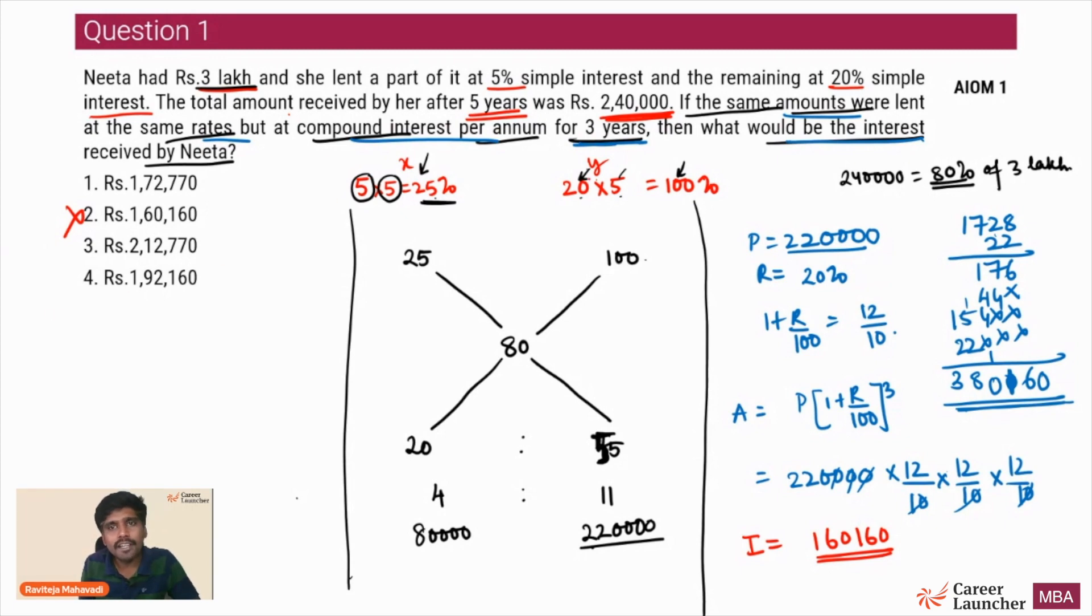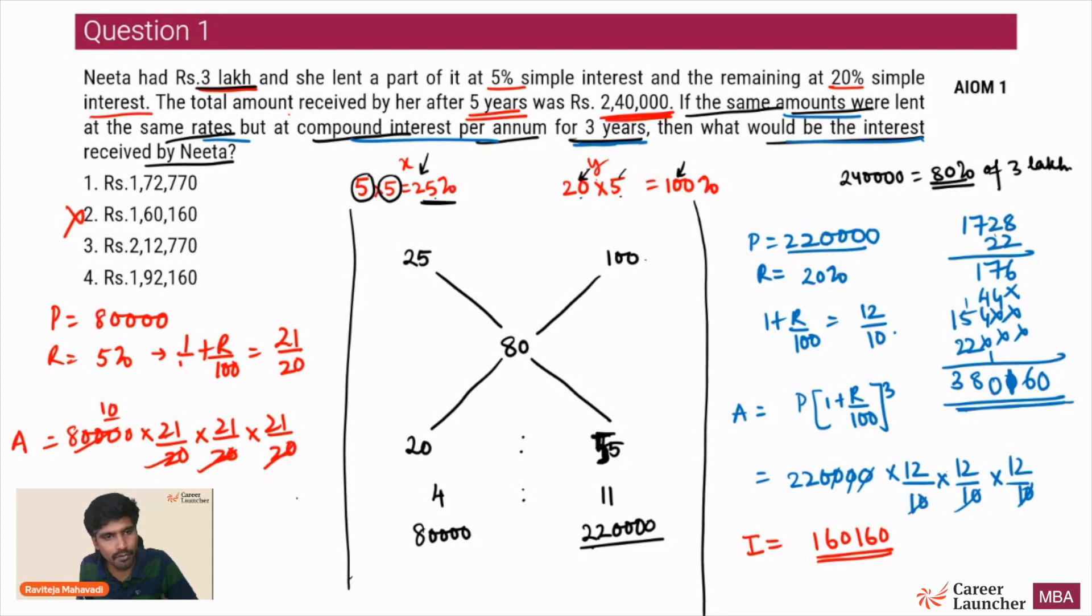Let's look at the other part. The second part - the principle is Rs. 80,000. Rate of interest is 5%. That means 1 plus r by 100 is equal to 21 by 20. Multiplication factors very important - 21 by 20. So P into (1 plus r by 100) whole cube in this case becomes 80,000 into 21/20 whole cube. 20 cube is 8,000, so we'll get 10 into 21 cube, which is 92,610 as the amount. So the interest I'll get over here is whatever is above 80,000, that is 12,610.